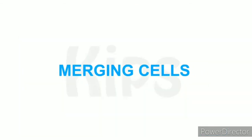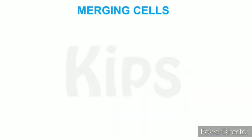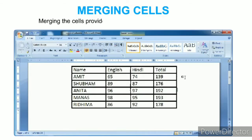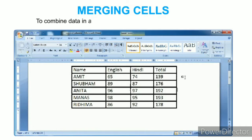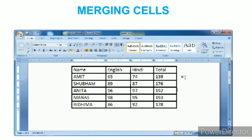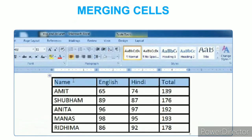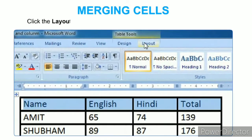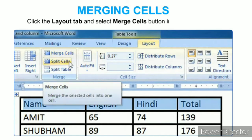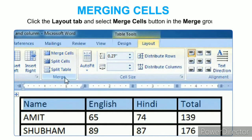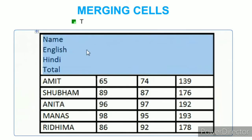To merge cells, merging cells provides a way to consolidate data in one cell. Select the cells you want to merge, click the Layout tab and select the Merge Cells button in the Merge group. The data gets combined in one cell.